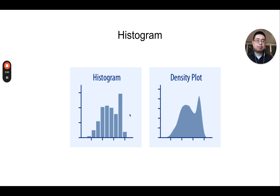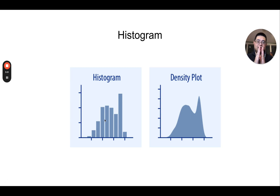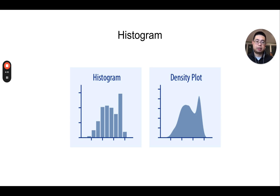The next type of plot is called a histogram. A histogram is used to visualize the distribution of a single variable. The x-axis has different bins, and you count how many values fall into each bin. If you make the bin size infinitely small, you get a density plot. This is very frequently used to check the distribution of your variable — for example, whether it follows a normal distribution — so you can apply appropriate statistical tests.